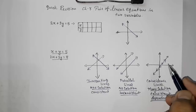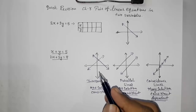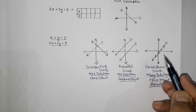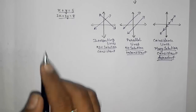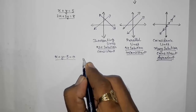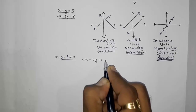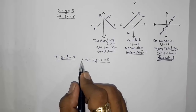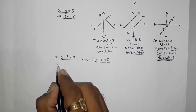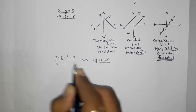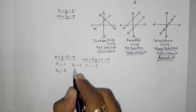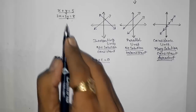Graphically we can find the solution — this is called the graphical method. Without drawing, we can also directly find whether lines will intersect, be parallel, or be coincident. For that, we arrange the equations in standard form: ax + by + c = 0. The number with x is called a, the number with y is called b, and the constant is c. From the first equation we get a1, b1, c1, and from the second equation we get a2, b2, c2.